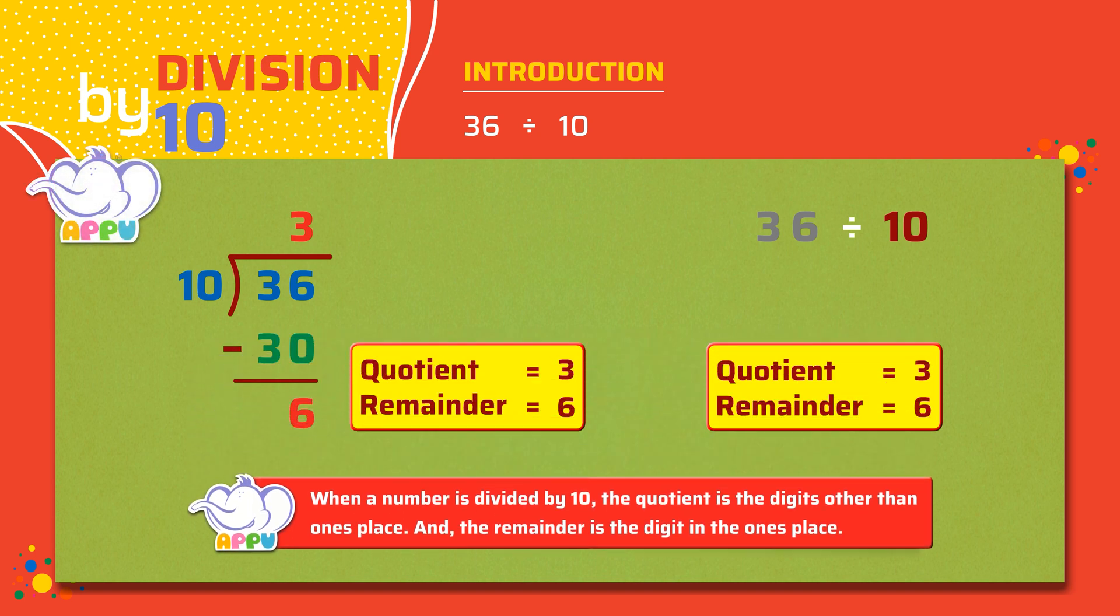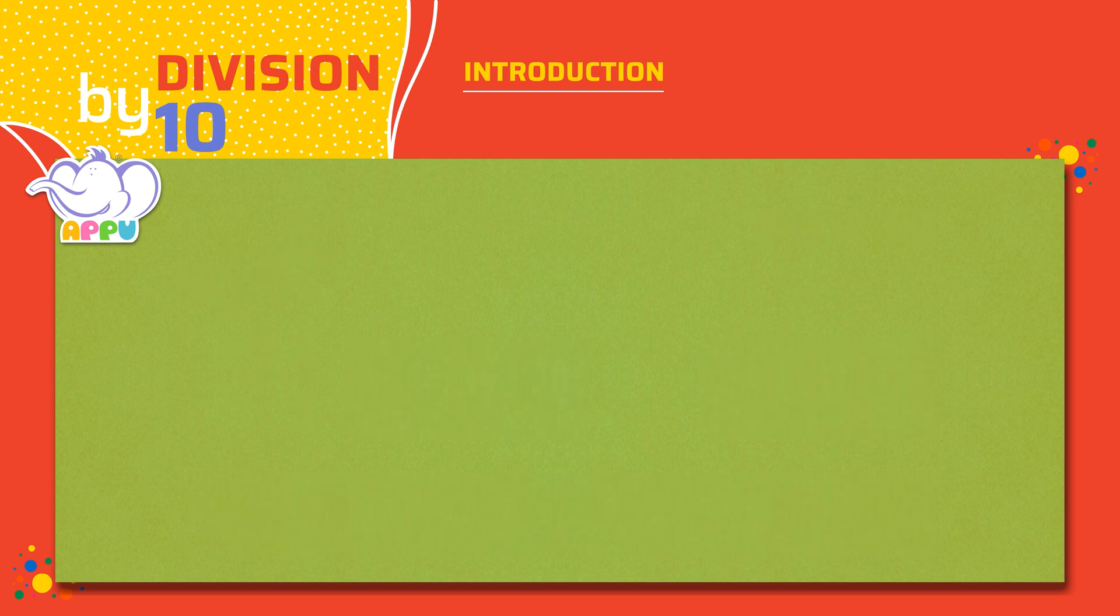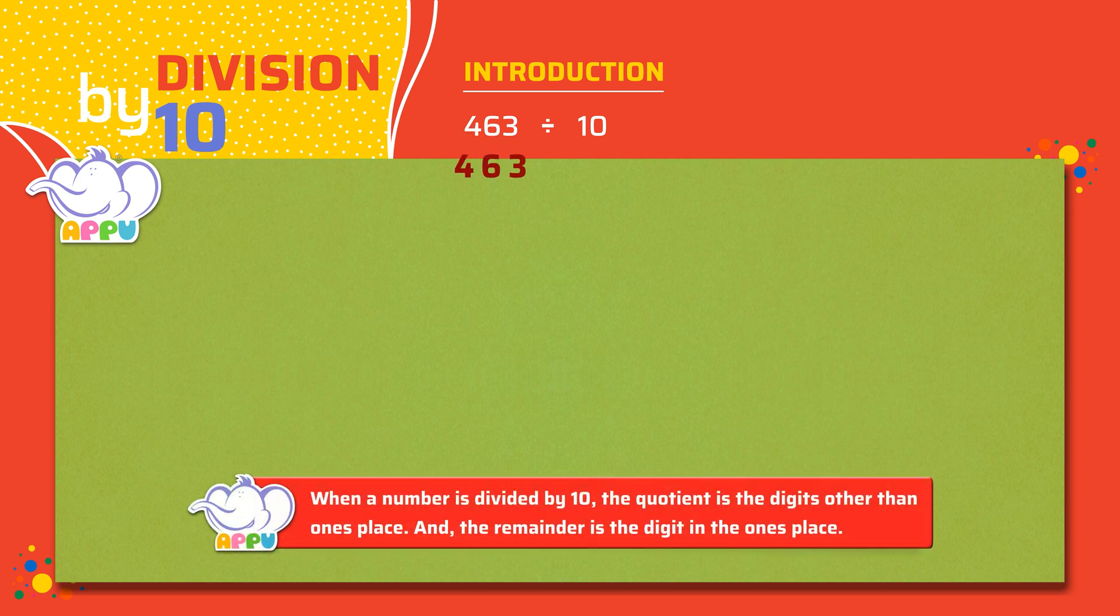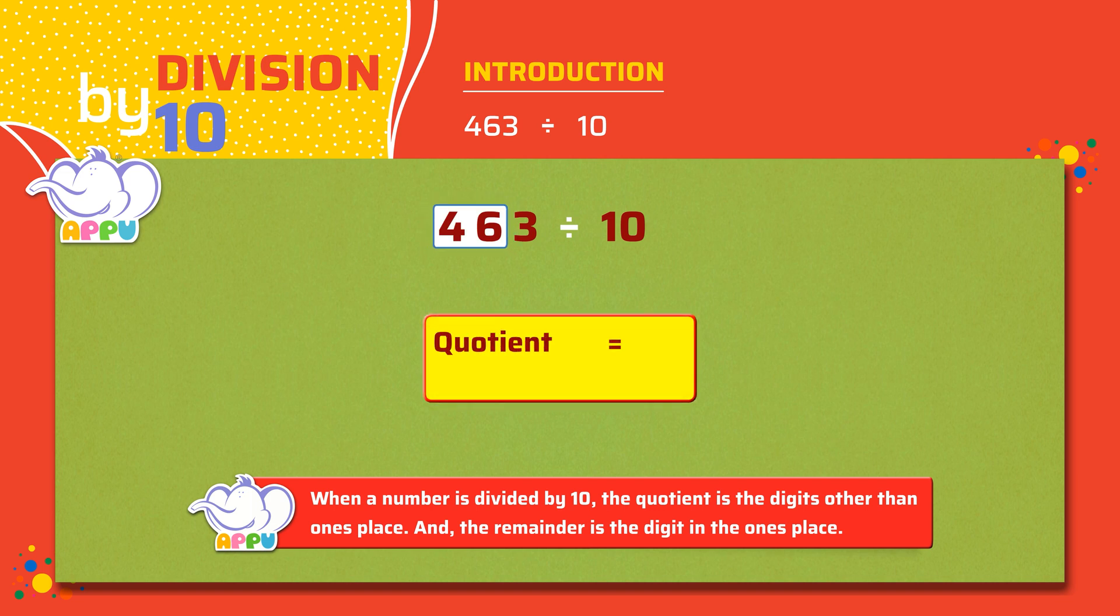Let's look at another example. 463 by 10. The quotient is the digits other than the ones place. That is 46. And the remainder is the number in the ones place. That is 3.